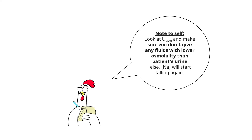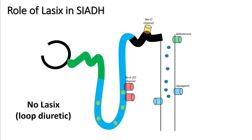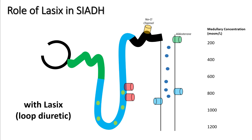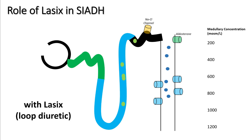Always check urine osmolality — do not give any fluids with lower osmolality than the patient's urine, or sodium will fall. In SIADH, some patients receive Lasix. In a normal person, the sodium-potassium-2-chloride channel pumps sodium into the renal medulla to maintain medullary concentration and create an osmotic gradient for water reabsorption through aquaporin channels. Lasix blocks these channels; diuresis and hypovolemia increase aquaporin channel numbers in the distal convoluted tubules, but because no sodium enters the medulla, the medullary concentration drops significantly, causing more free water loss in the urine.